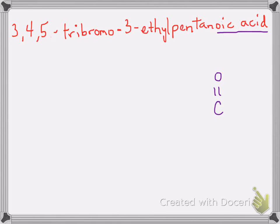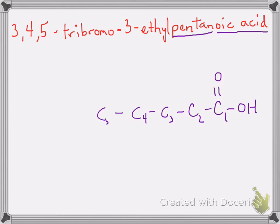A carboxylic acid has the general structure shown here, and we just have to figure out what the R group is on the left-hand side. The parent name tells us the longest chain containing the carboxylic carbon — it's a pentanoic acid, meaning five carbons, so we draw a chain of five carbons. We number those carbons starting with the carboxyl carbon as number one, giving us five carbons in the chain.